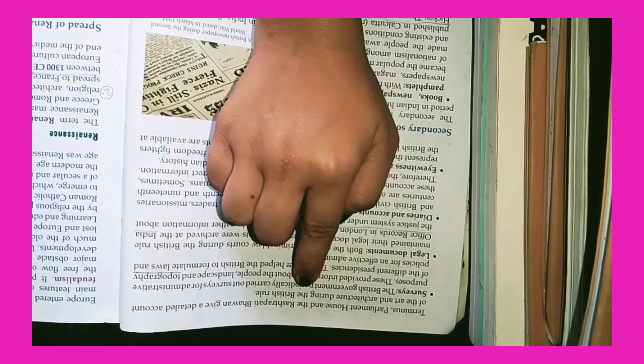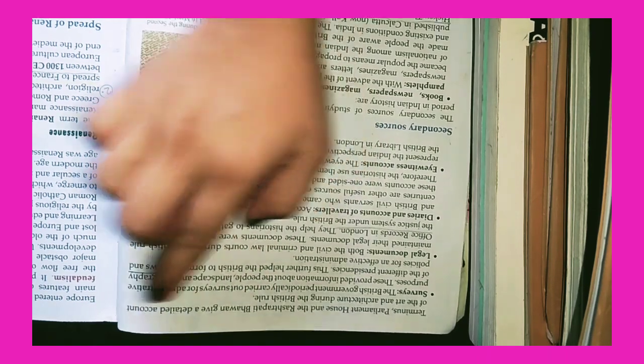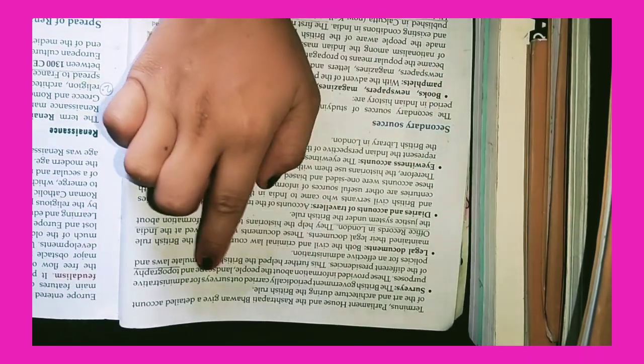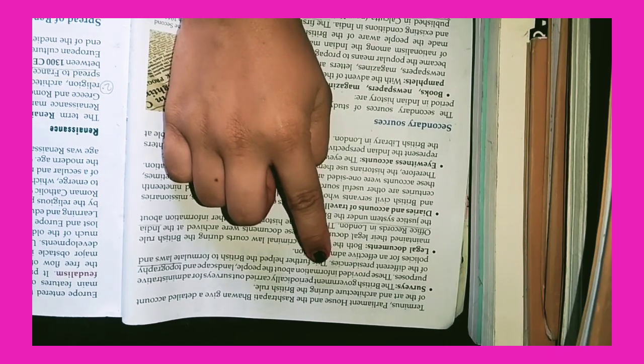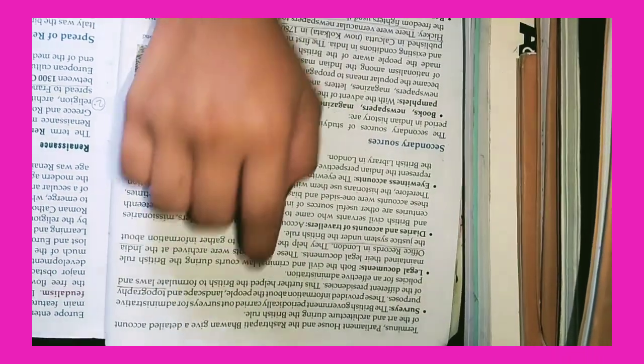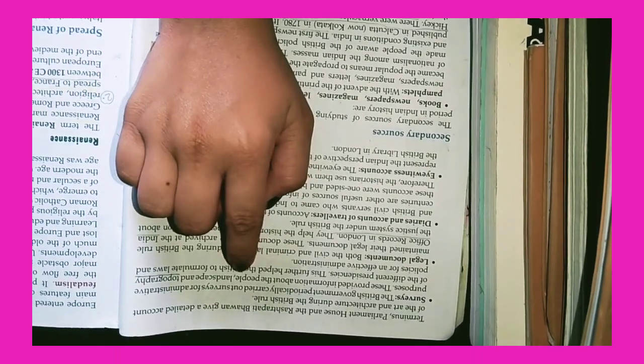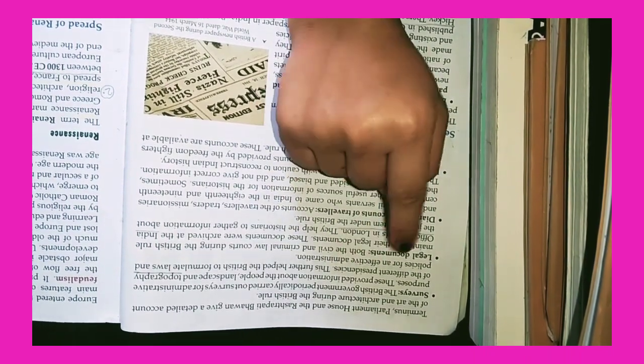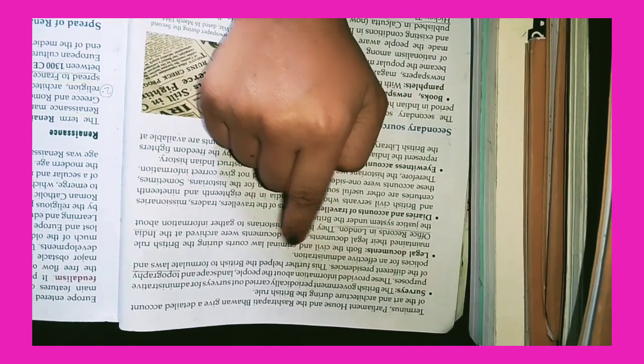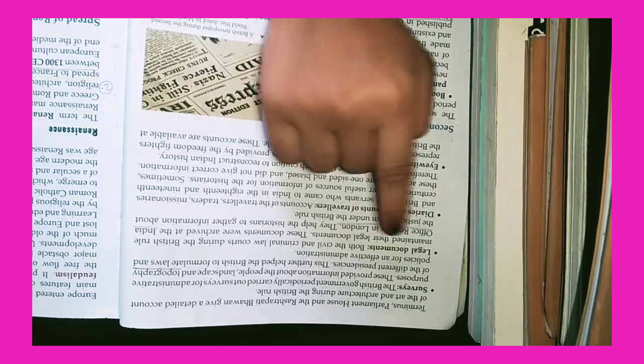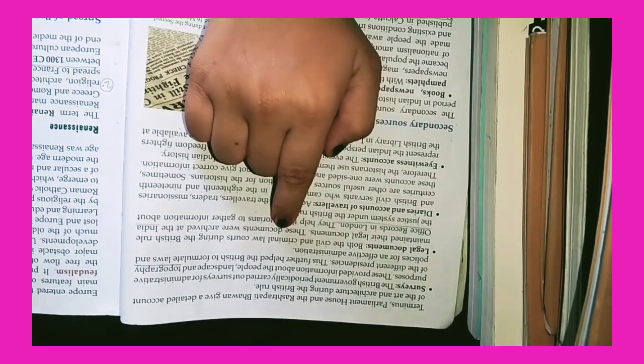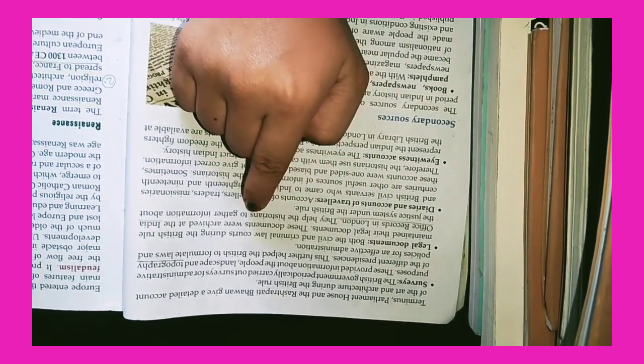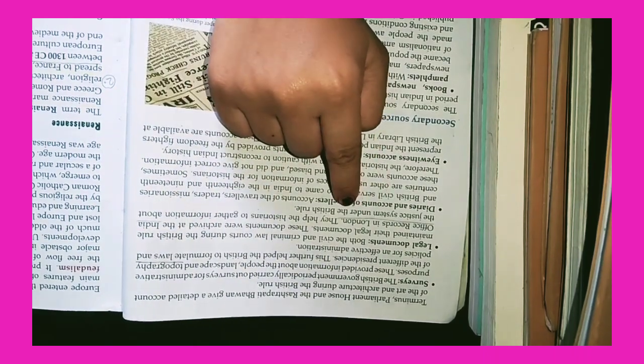Surveys: The British government periodically carried out surveys for administrative purposes. These provided information about the people, landscape and topography of different presidencies. Legal Documents: Both the civil and criminal law courts during the British rule maintained their legal documents. These documents were archived at the India Office Records in London.